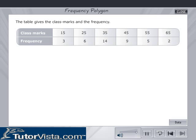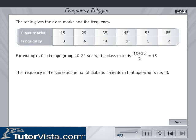The table gives the class marks and the frequency. For example, for the age group 10 to 20 years, the class mark is 10 plus 20 by 2, which is equal to 15. The frequency is the same as the number of diabetic patients in that age group, i.e., 3.